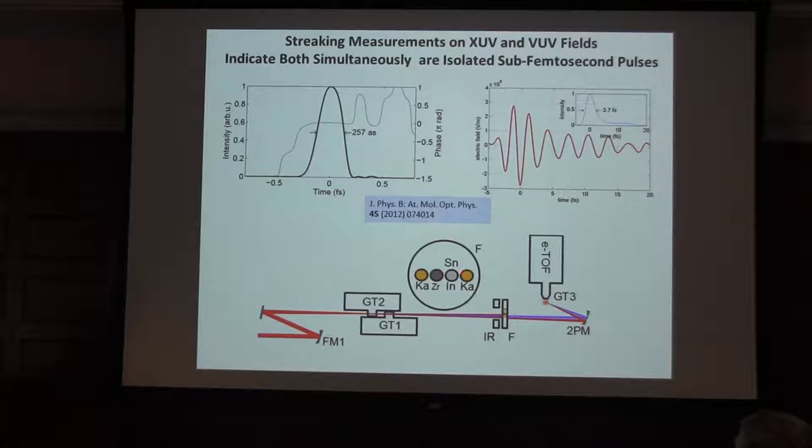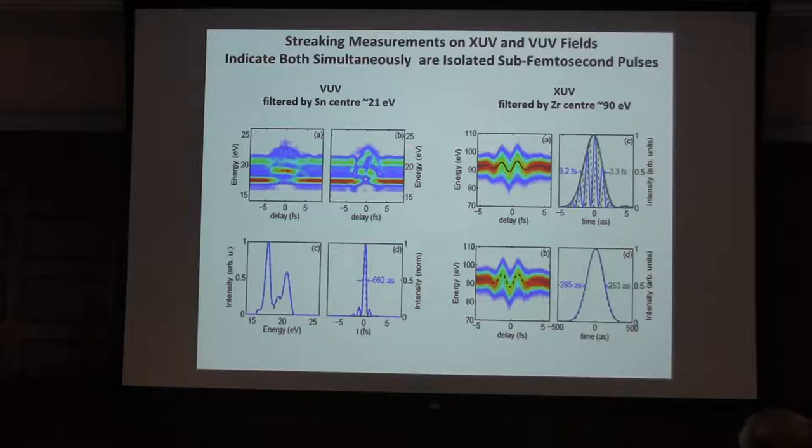That's what we did up here in order to do a streak measurement of the XUV pulse duration. Or we can move it to a zirconium indium or zirconium tin filter, so we then have some VUV and some XUV for a pump probe experiment. Or to an indium or tin and Kapton, in which case we can do a streak measurement of the VUV. So that's what we've been doing over the last few months.